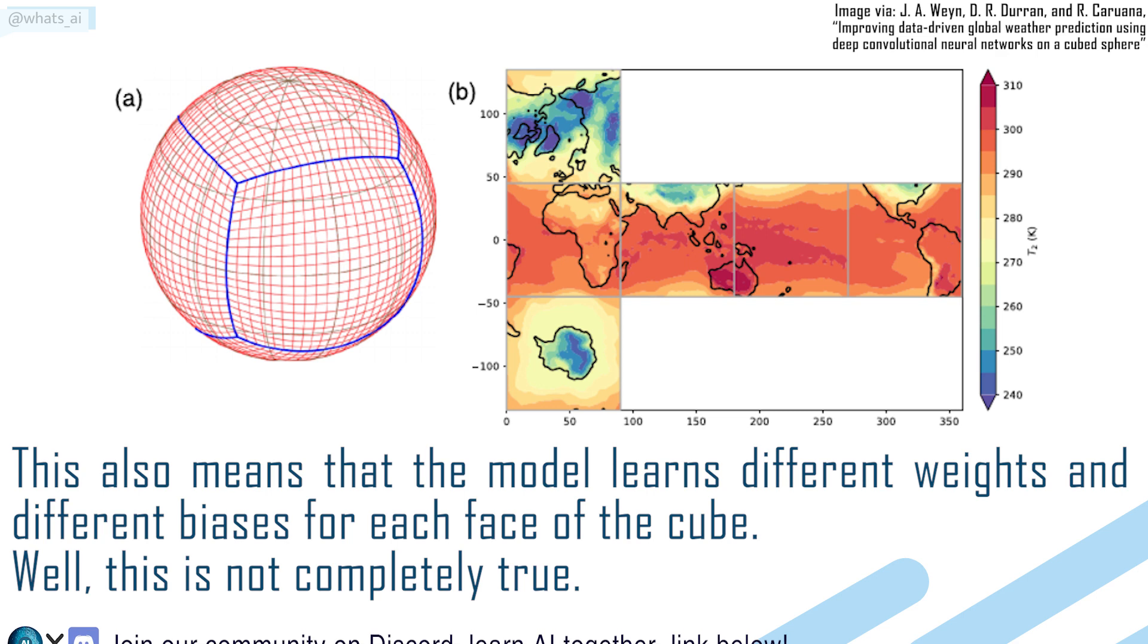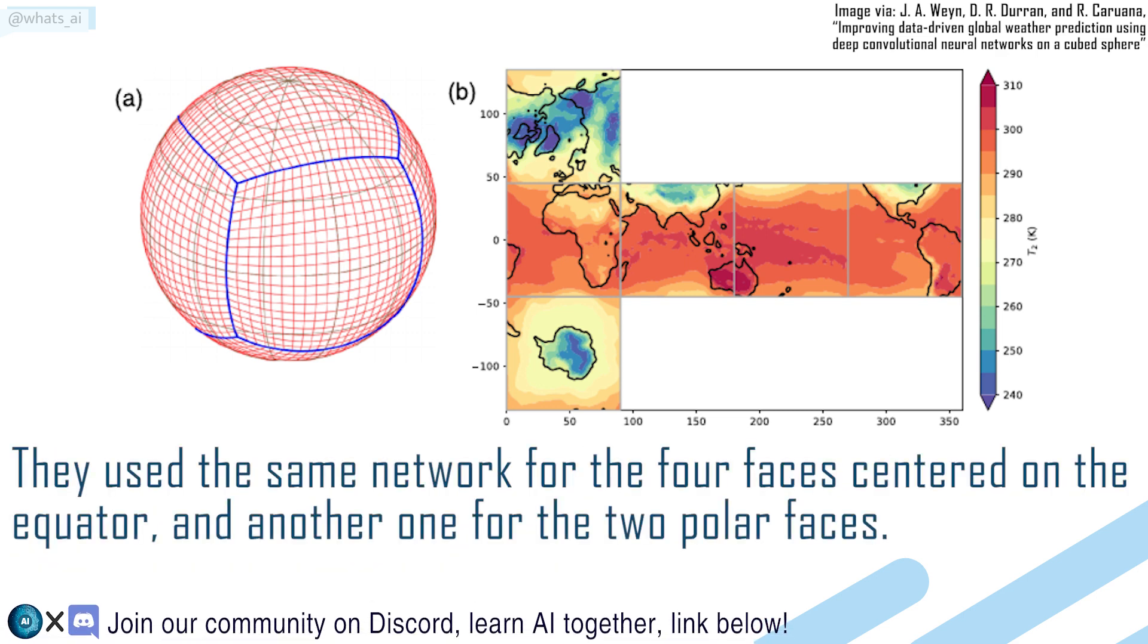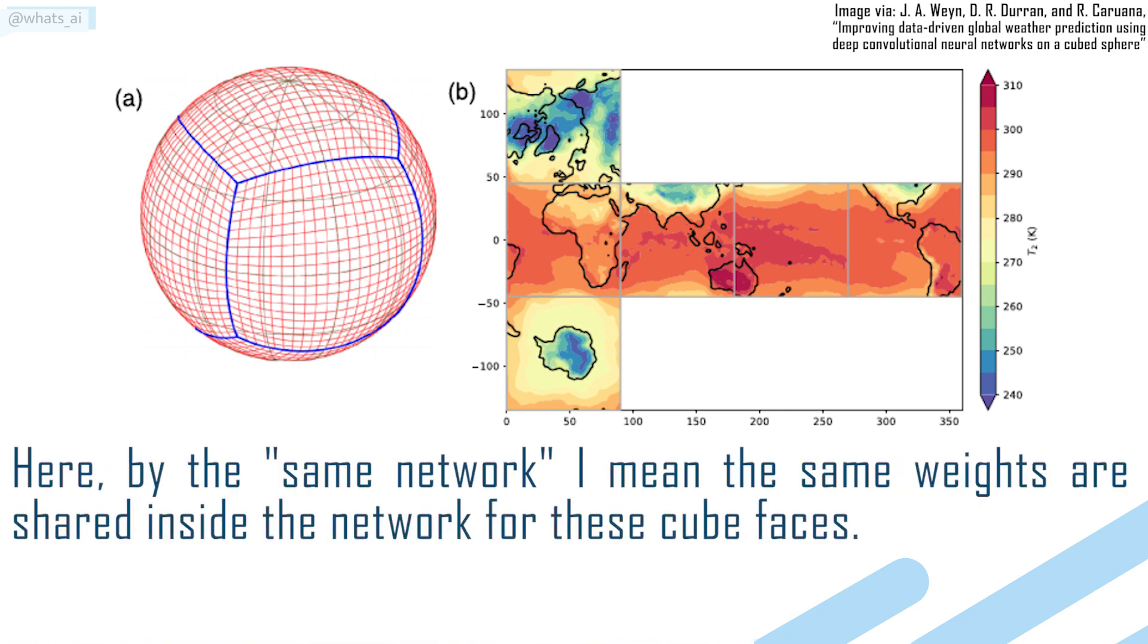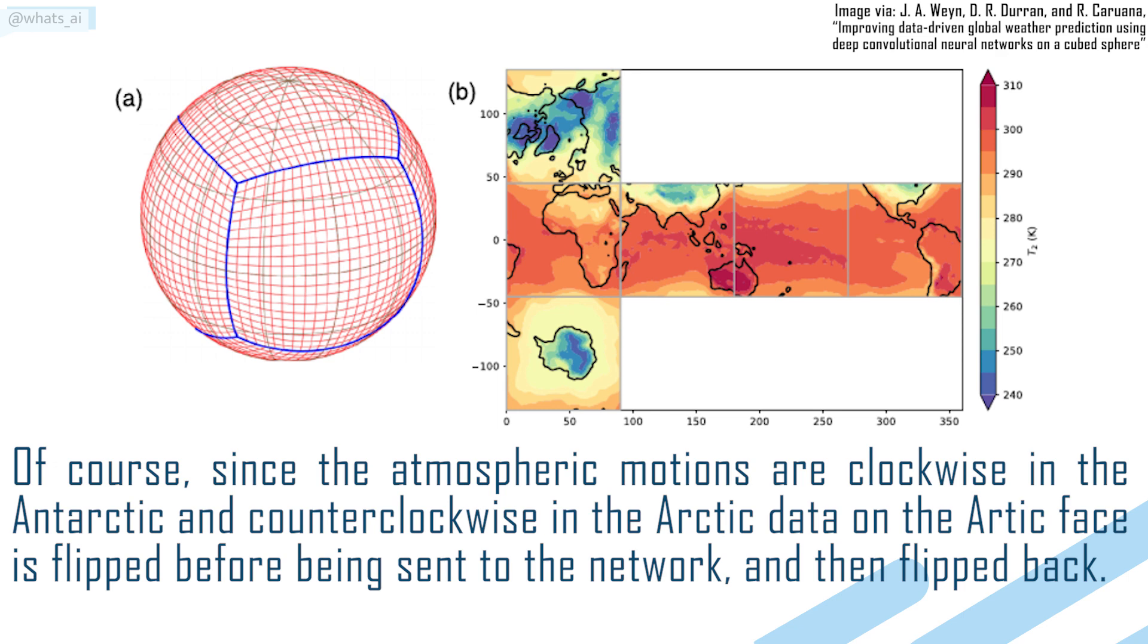Well, this is not completely true. They use the same network for the four faces centered on the equator, and another one for the two polar faces. Here, by the same network, I mean the same weights are shared inside the network for these cube faces. Of course, since the atmospheric motions are clockwise in the Antarctic and counterclockwise in the Arctic, data on the Arctic face is flipped before being sent to the network, and then flipped back.